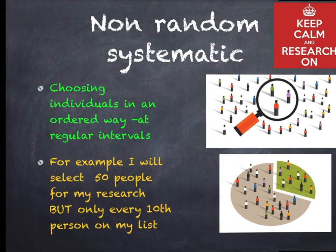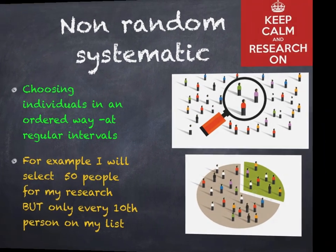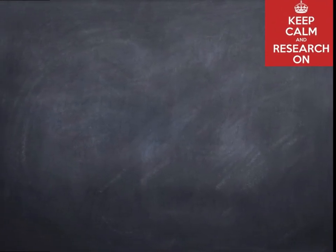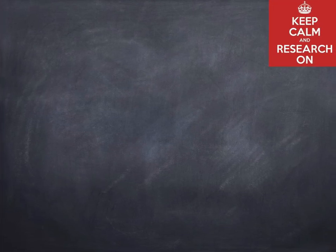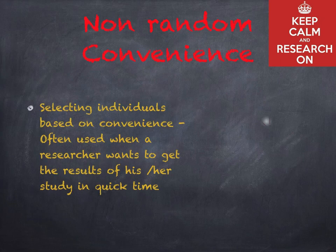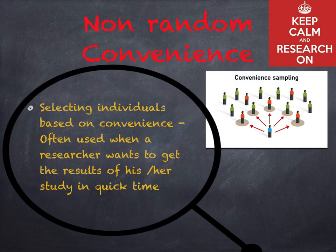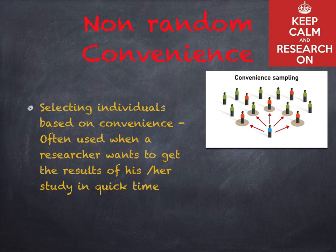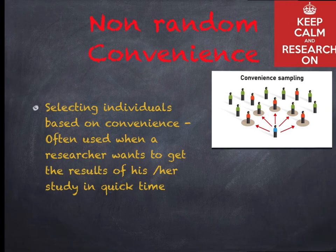Our final type is non-random convenience sampling. This involves selecting individuals based on convenience and is often used when a researcher wants to get the results of their research or study in a quick time.